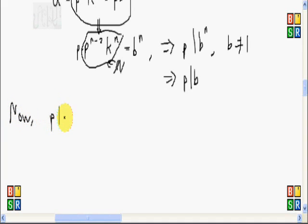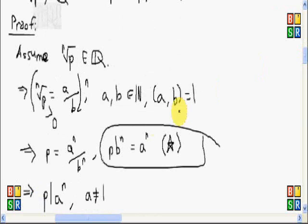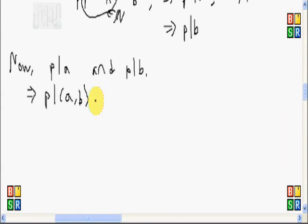Now, we have p divides a and p divides b. This means that p divides the gcd of a and b. But we know that the gcd of a and b here is equal to 1. So we will write that one here. So we now have p divides 1.